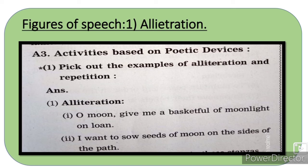Figures of speech میں alliteration کی activity ہے۔ Alliteration میں دو words کا same sound آتا ہے — جیسے: 'I want to sow seeds of moon on the sides of the path' میں 'sow seeds' — ss کی آواز آ رہی ہے، اس لیے یہ alliteration ہے۔ دوسری مثال: 'Oh moon, give me a basket full of moonlight on loan, I want to sow seeds of moon on the sides of the path' — یہ بھی alliteration کی activity ہے۔